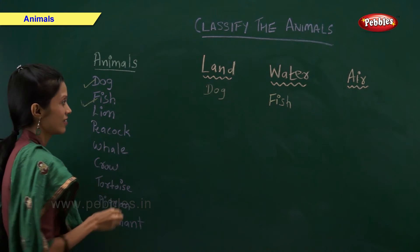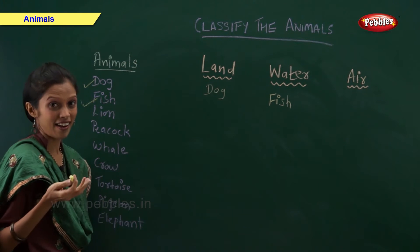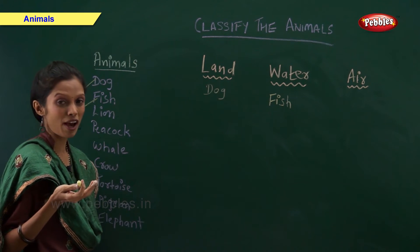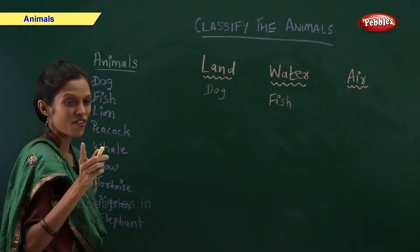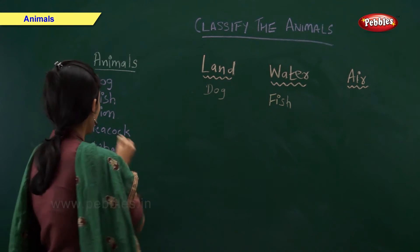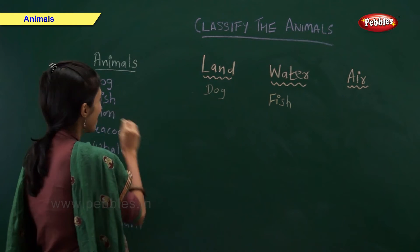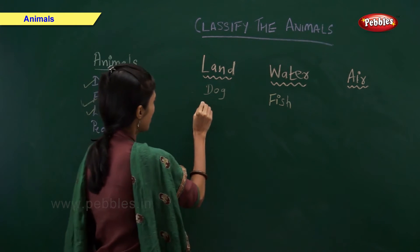Lion. Lion is which type of animal? Right, lion is a land animal.